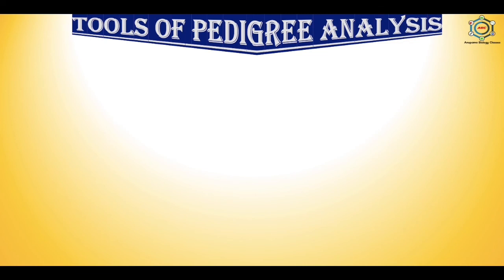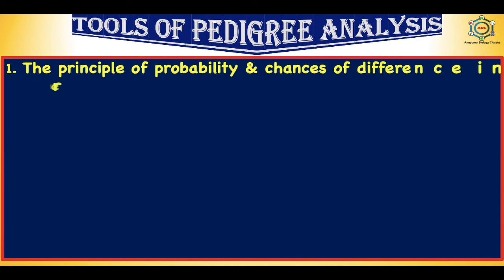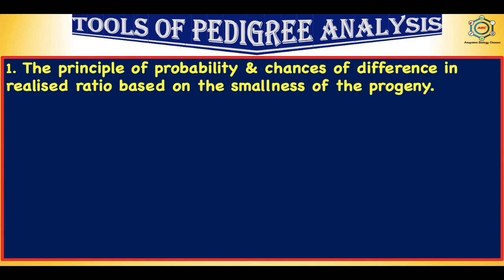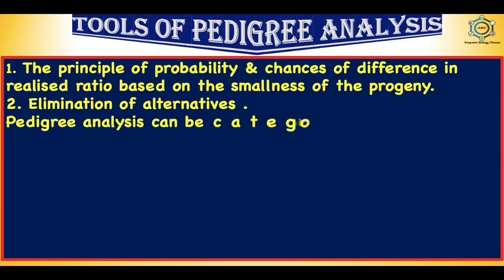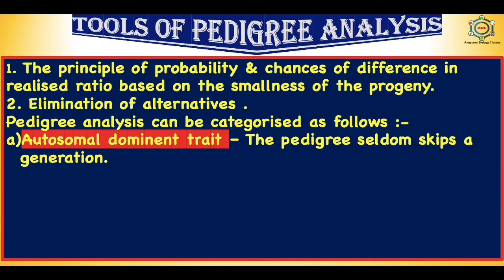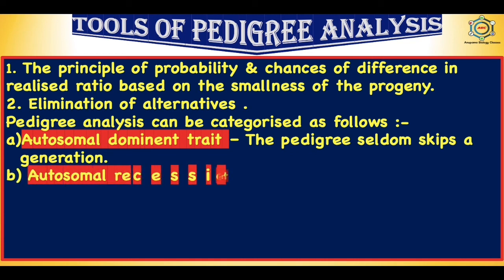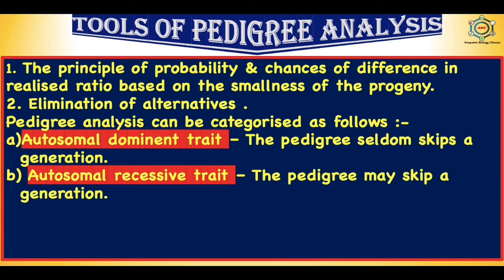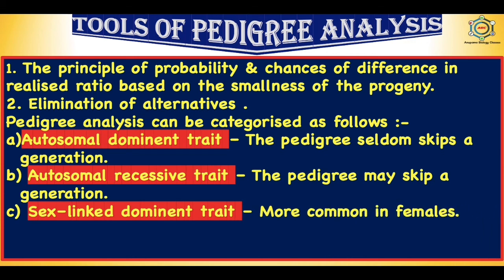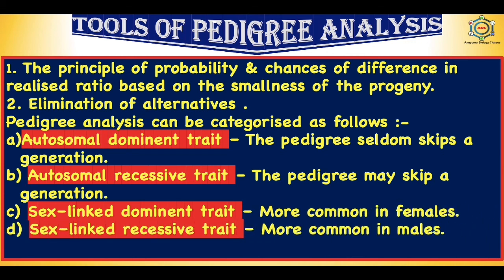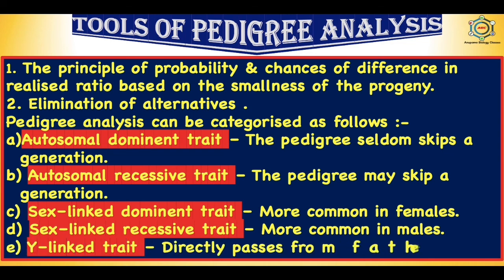Pedigree analysis can be categorized as follows: autosomal dominant trait — the pedigree seldom skips a generation; autosomal recessive trait — the pedigree may skip a generation; sex-linked dominant trait — more common in females; sex-linked recessive trait — more common in males; and a sex-linked trait passes directly from father to son.